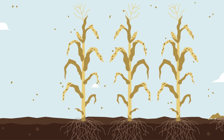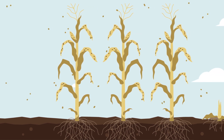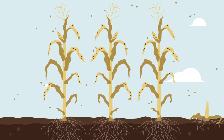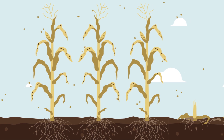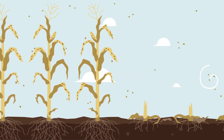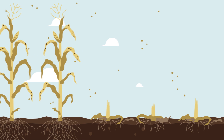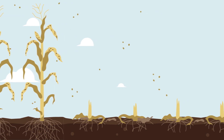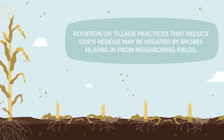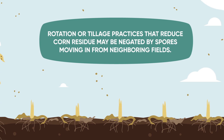After the growing season, the infected tissue dries and is returned to the field at harvest. The fungus then overwinters in infected corn residue and has been proven to survive for more than one year. Unfortunately, managing corn residue doesn't eliminate the risk of tar spot.